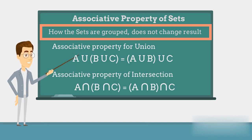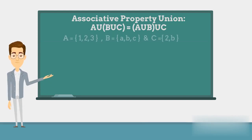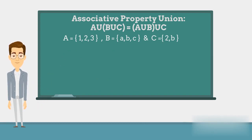Let's prove this property with the help of examples. Suppose set A contains 1, 2, and 3; set B contains A, B, and C; and set C contains 2 and B.